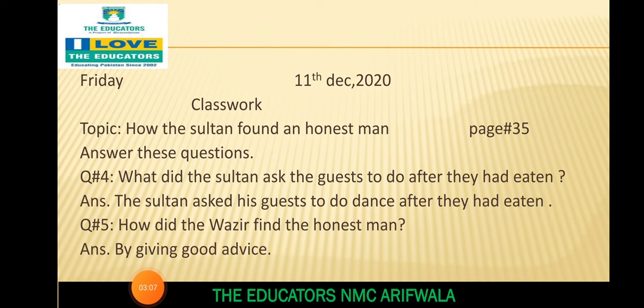یہ تو ہماری workbook solve ہو گئی۔ Next ہم نے کیا کرنا ہے - how the sultan found an honest man کی question number one, two and three ہم نے پہلے solve کیا تھا اپنی notebook پہ۔ آج ہم اس کے next two questions کو اپنی notebook پہ solve کریں گے۔ سب جلدی سے notebooks open کریں، margin draw کریں، date لگائیں۔